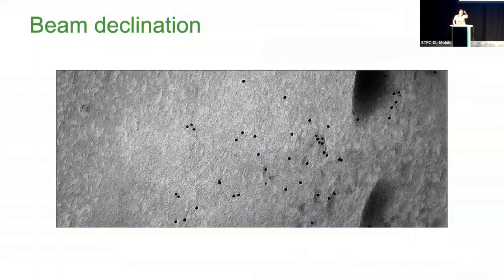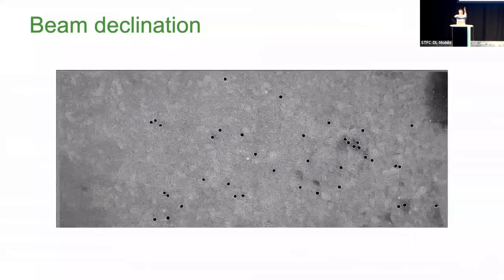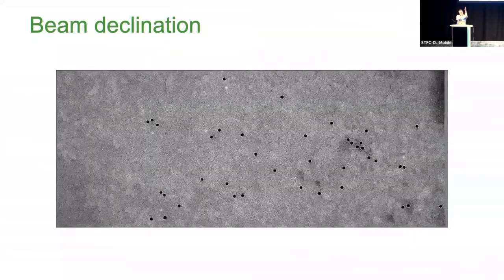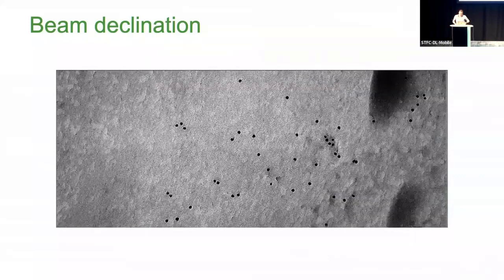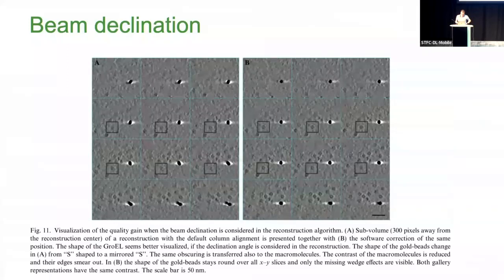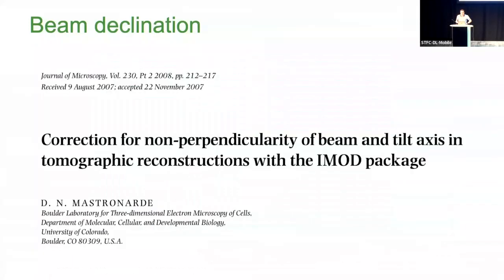Beam declination has been discussed for a while. Archelis from Carazo's group realized that on a standard ThermoScientific stage, if you take a tomogram and follow the beads, you expect a line along the tilt axis but instead get an oval — meaning the optical axis and the stage tilt axis have a slight offset, giving you a conical tomogram. That causes problems in reconstructions. David Mastronarde fixed it in IMOD so you can solve for it. Nicely, for people with fringe-free illumination on the Krios, changing the stage height happens to minimize beam declination.